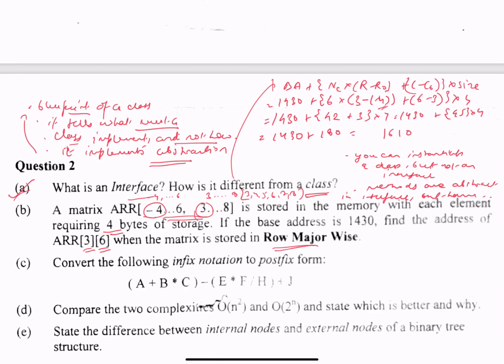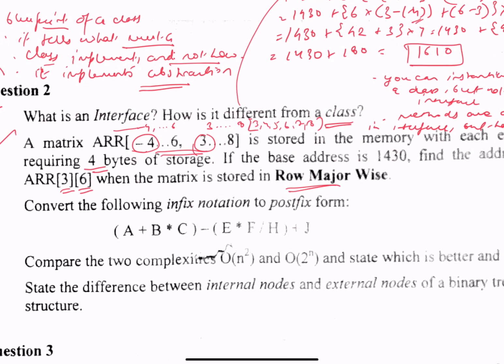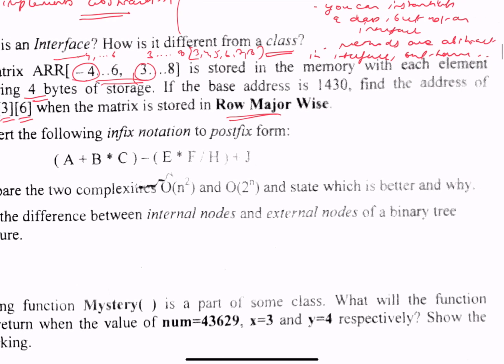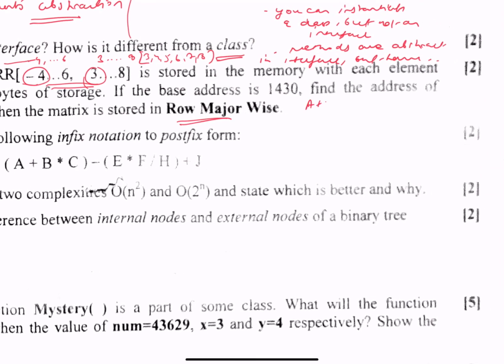So part B is done. Moving on to part C: convert the following infix to postfix. So we have A + B * C - (E * F / H) + J.